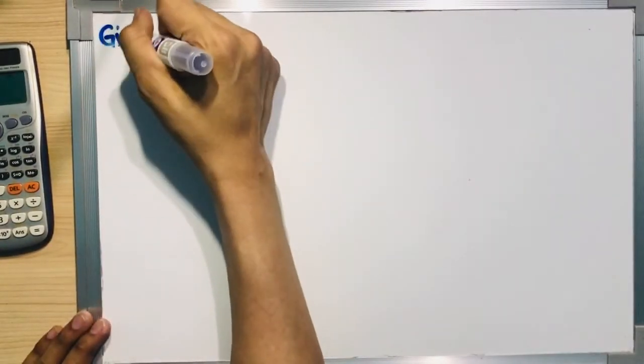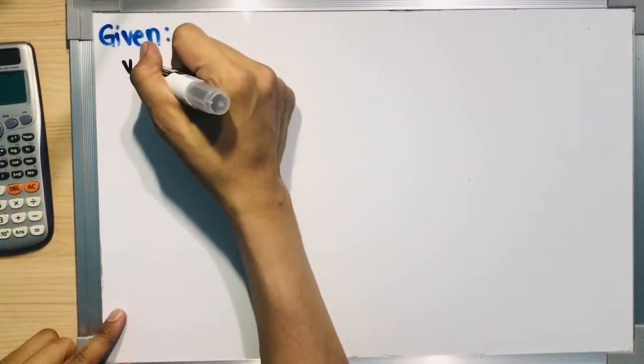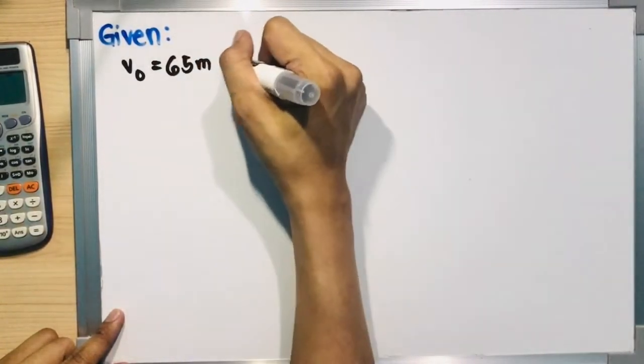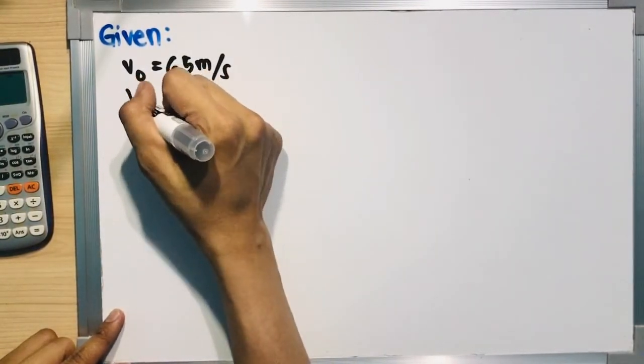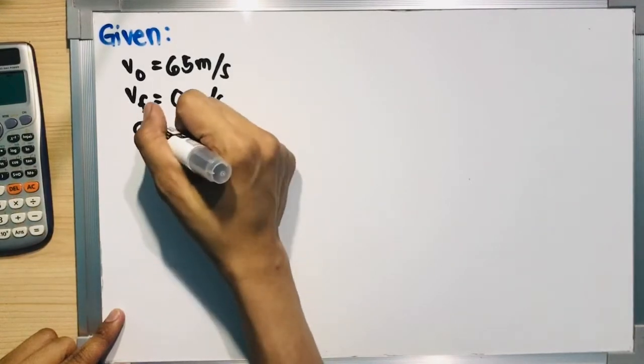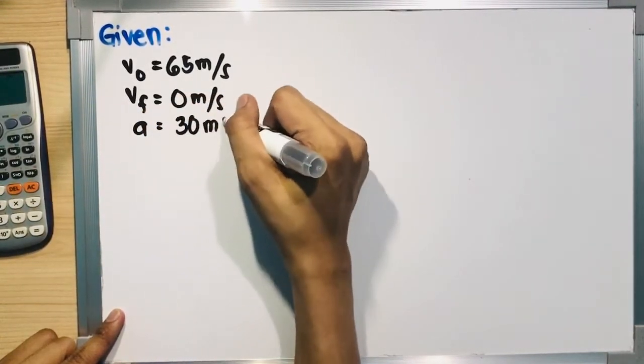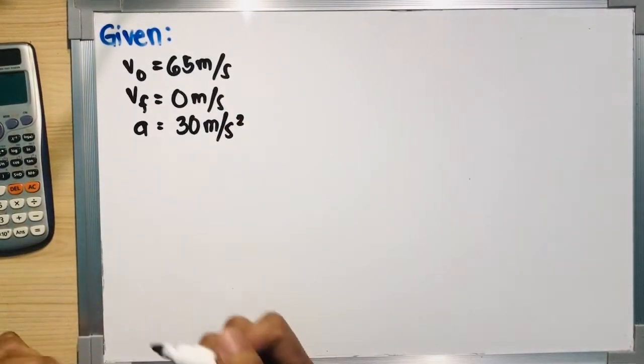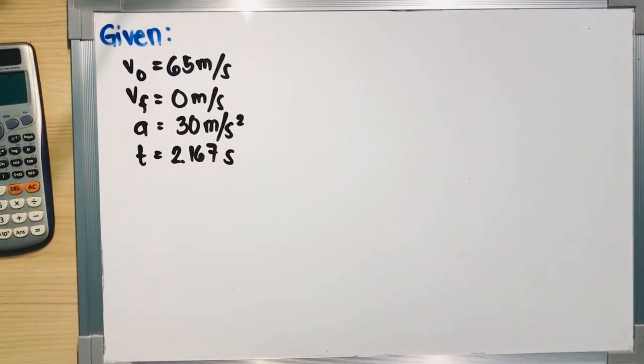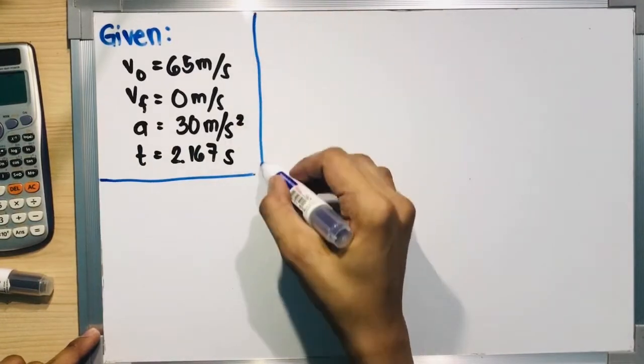Given its initial velocity of 65 meters per second and deceleration of 30 meters per second squared, let's write the given values for reference before we solve the additional problem. For the given, we have the initial velocity 65 meters per second, the final velocity will be zero meters per second given that it will make a full stop, the deceleration is 30 meters per second squared, and we already have the time that we solved as 2.167 seconds.